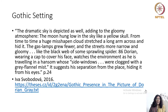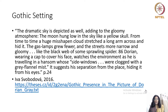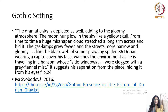The dramatic sky also adds to the gloomy atmosphere. 'The moon hung low in the sky like a yellow skull. From time to time, a huge misshapen cloud stretched a long arm across and hid it. The gas lamps grew fewer and the streets more narrow and gloomy, like the black web of some sprawling spider.' Dorian, wearing a cap to cover his face, watches the environment as he travels in a hansom cab whose side windows were clothed with a gray flannel mist, suggesting his separation from the place.